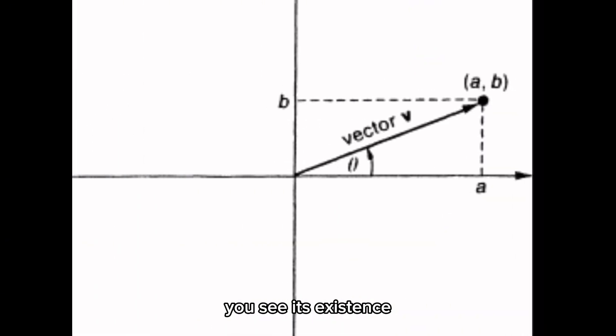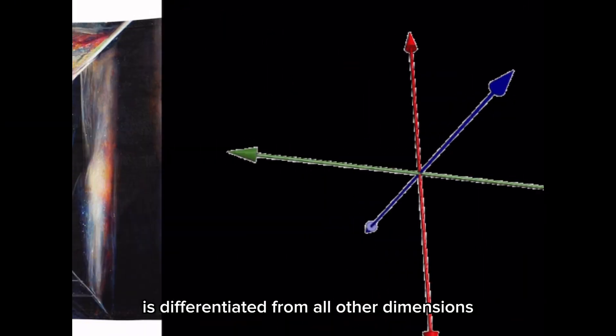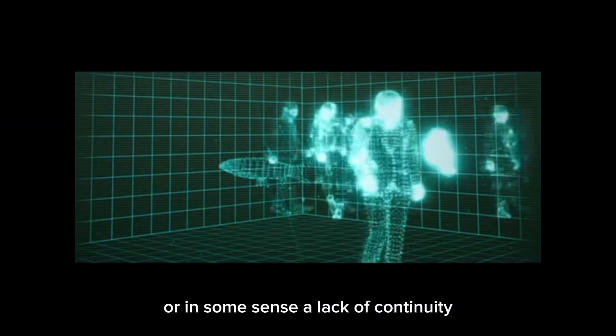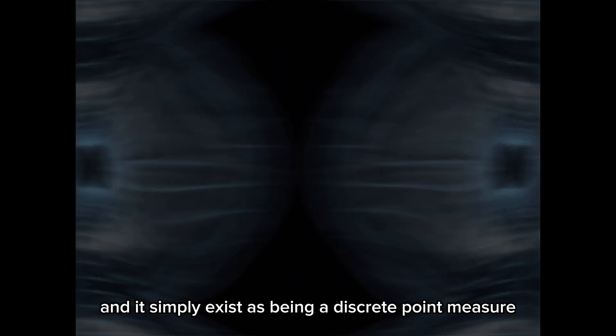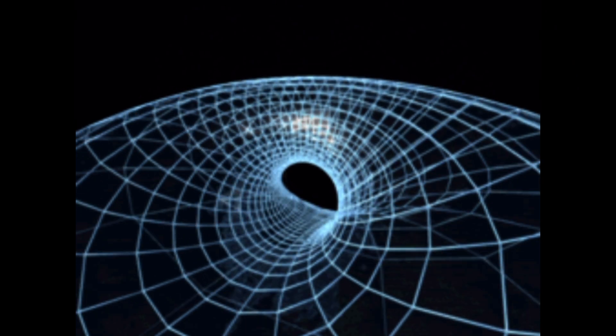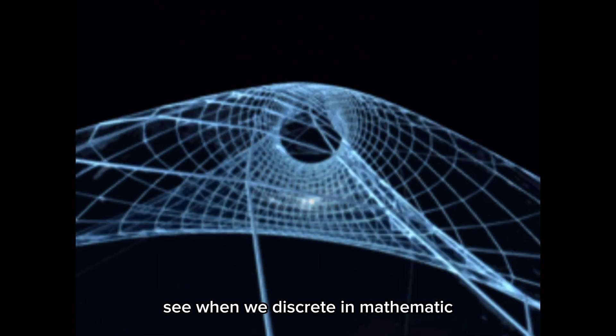So what is it that is there? What is it being there? You see, its existence is differentiated from all other dimensions or in some sense a lack of continuity, and it simply exists as being a discrete point measure. Its pure existence is being discrete.